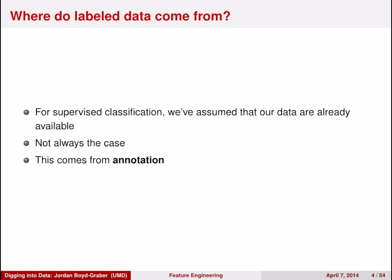Usually these labels come from annotation. You have someone looking at emails saying whether it's spam or not. You have someone looking at a credit report saying whether you should lend money to them or not. These are expensive labels. We want to automate this, but first we need to get these labels in a way that we can trust.